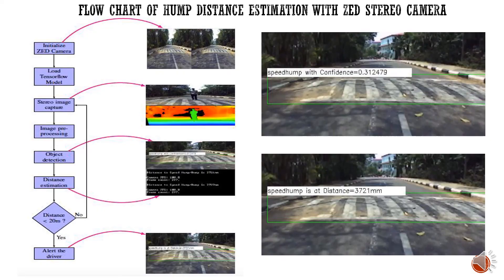This flowchart shows the distance estimation method: the Z camera is initialized first, takes left and right images, then the TensorFlow trained model for unmarked and marked speed humps or bumps is loaded. The image is converted to a stereo image, pre-processed, and with object detection the distance is calculated and displayed on screen — printed both as text and in the bounding box. If the distance is less than 20 meters, the driver is alerted. The 20-meter constraint comes from the Z Stereo Camera's effective range of 20 meters.